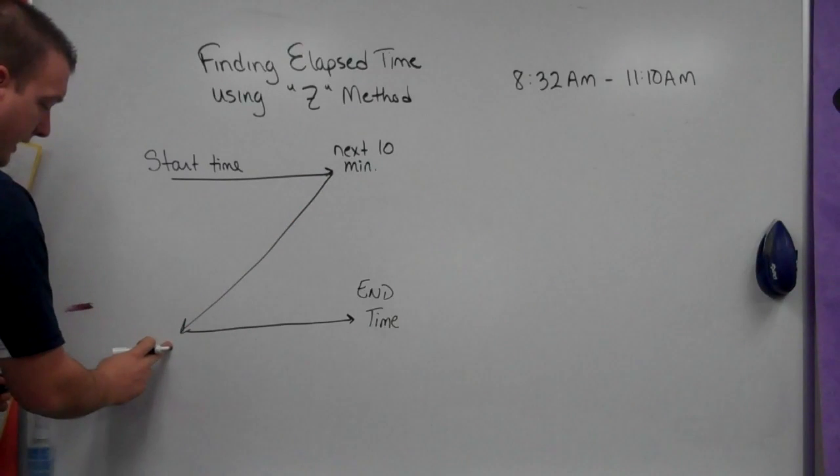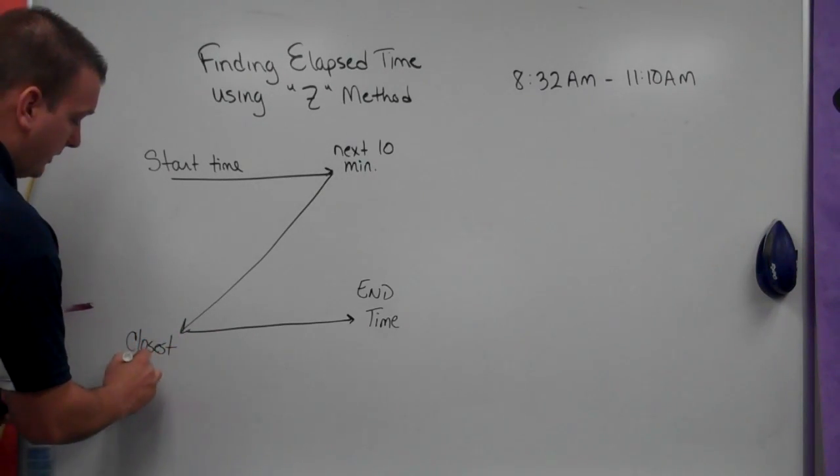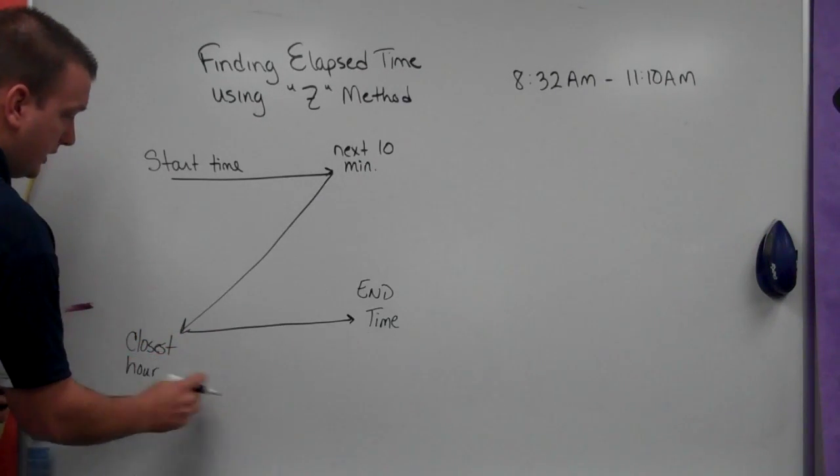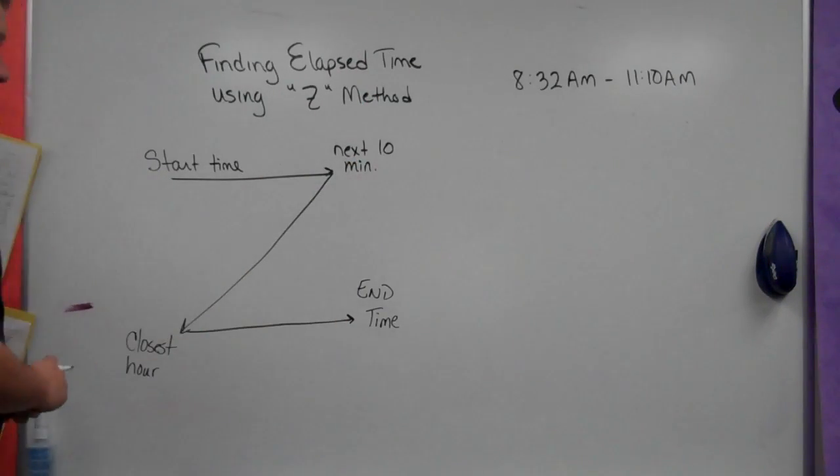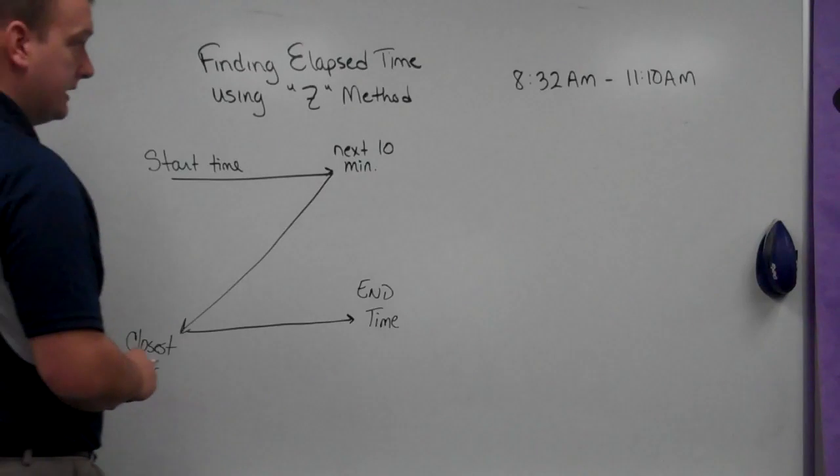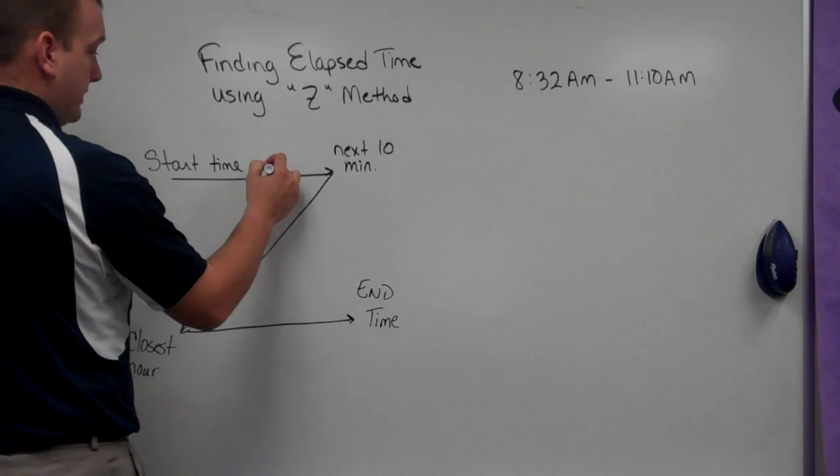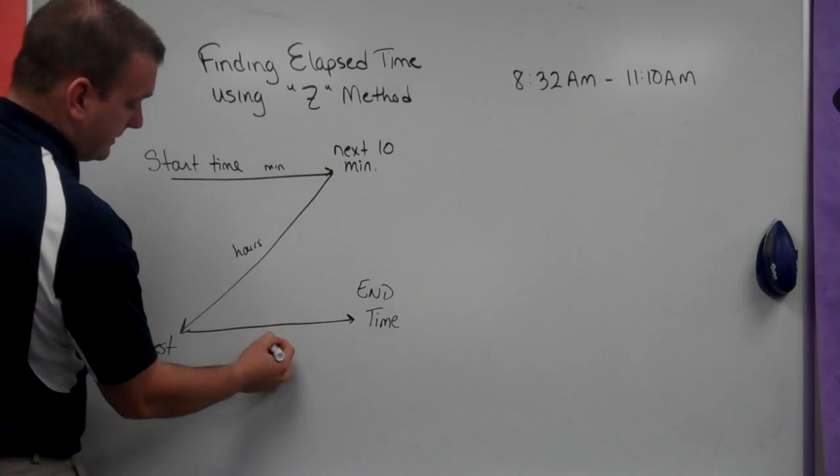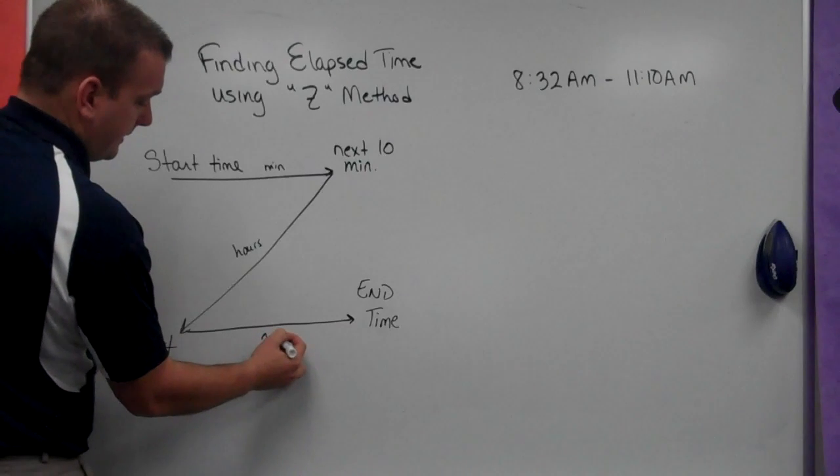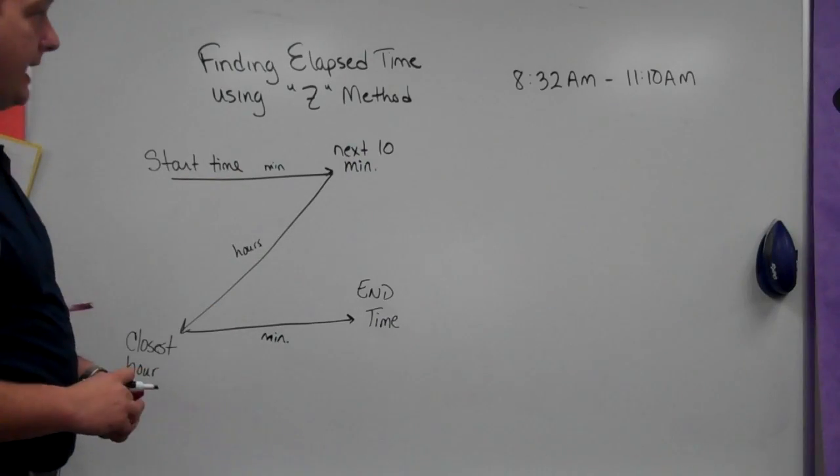Then, I want to go from this point down to the next closest hour to our ending time, the closest hour to the end time, which would be 11 a.m. Then, the last part, we end up finishing with our ending time. What we have is we will end up with usually some minutes here, some hours here, and then minutes again at the end, which we'll then calculate and add up to get our hours and minutes that have passed.